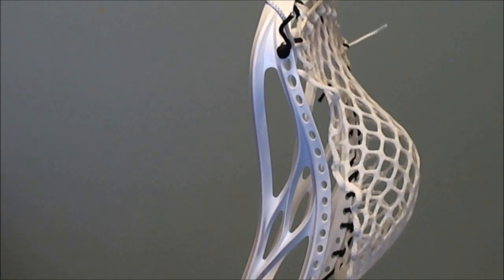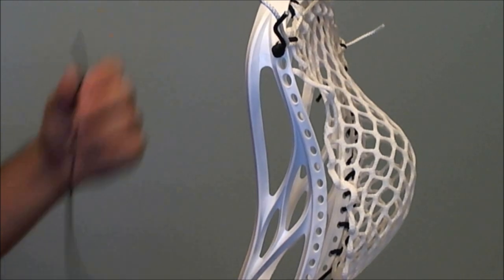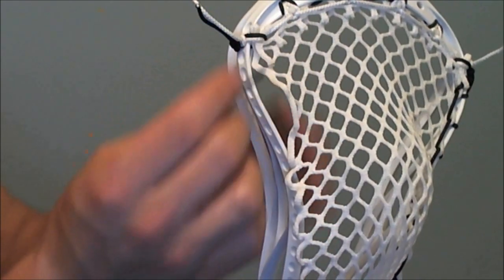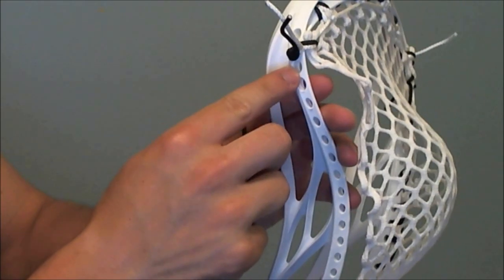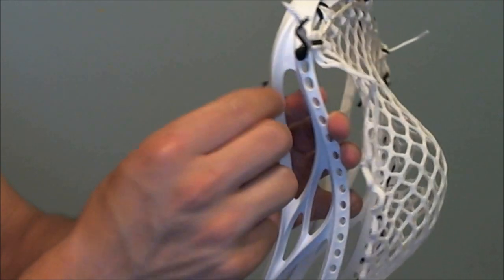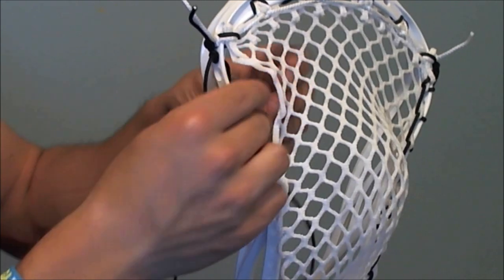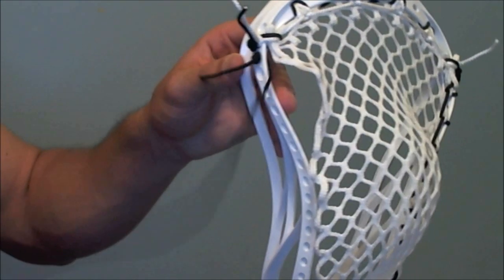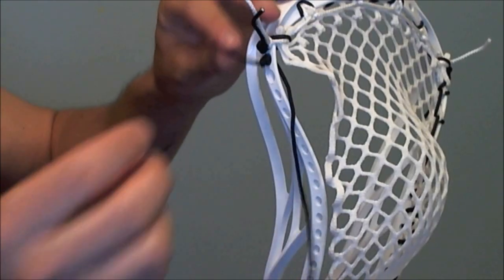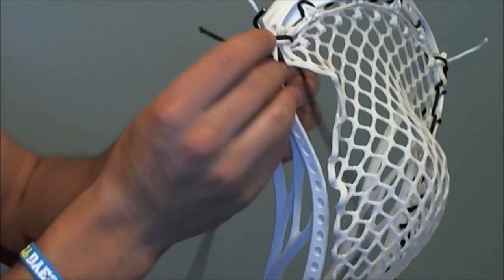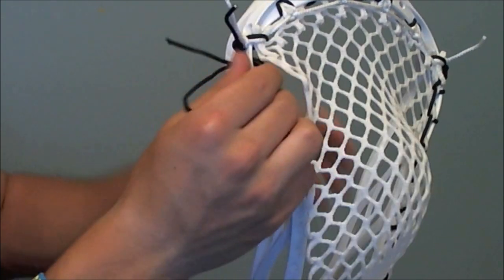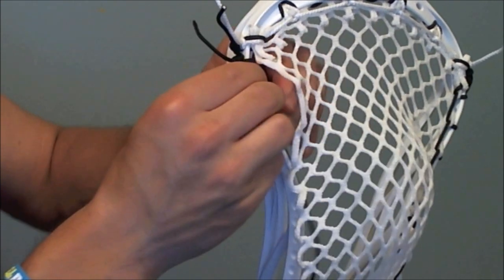So to start off our sidewall, here I've got my sidewall black and white so you can see it really well. And I'm going to take our sidewall string and put it in through the outside of the third sidewall hole. And then just so that the knot doesn't fall through the hole, I like to just come back around and put the string back through that hole again without having gone through any mesh.